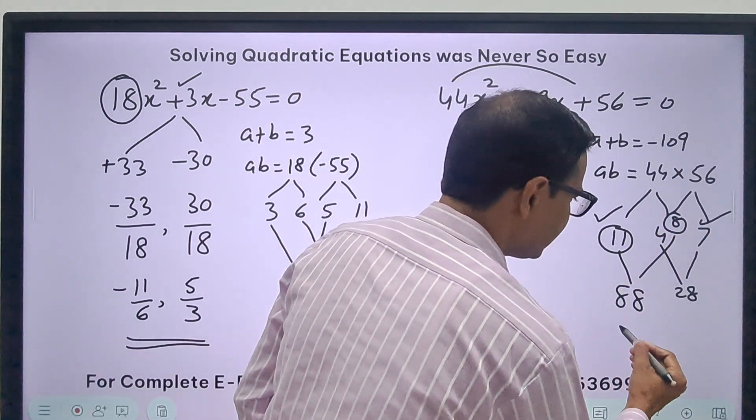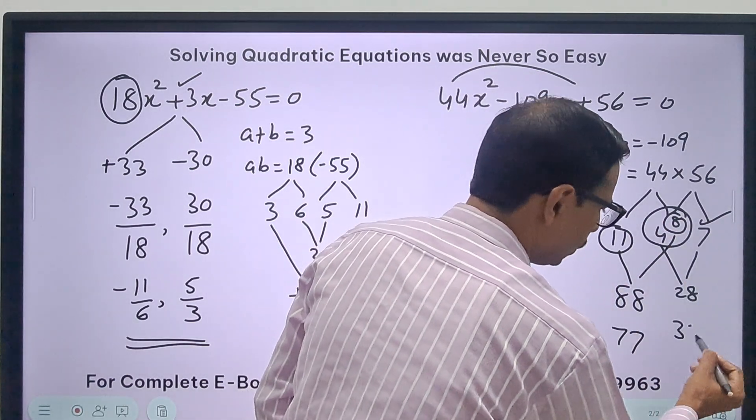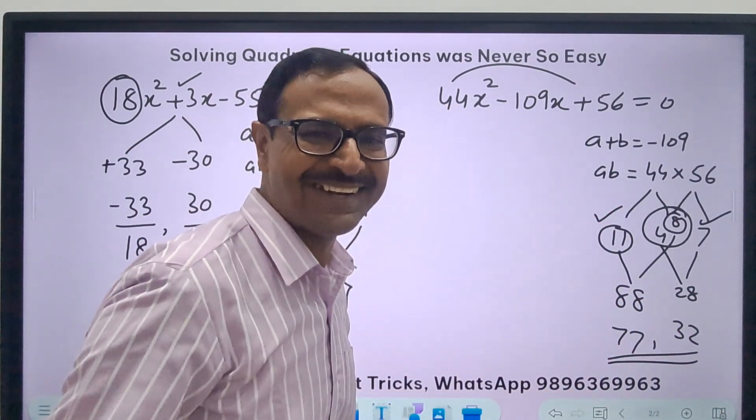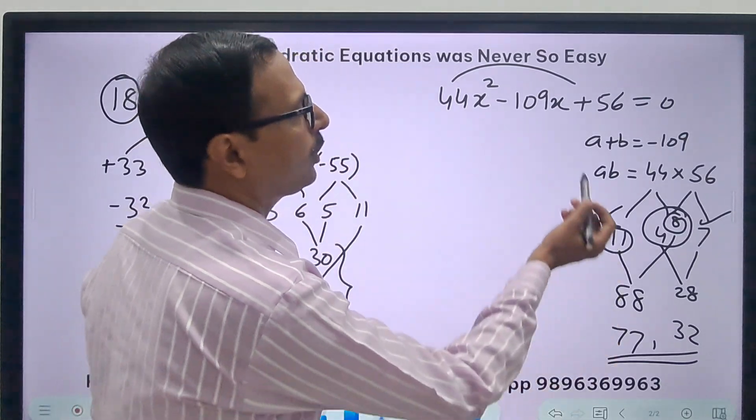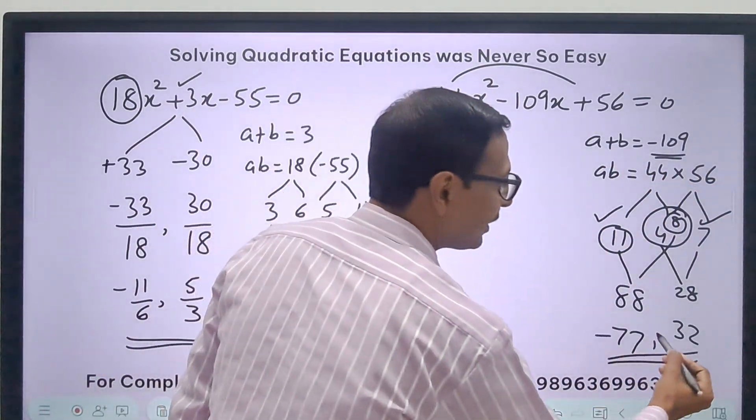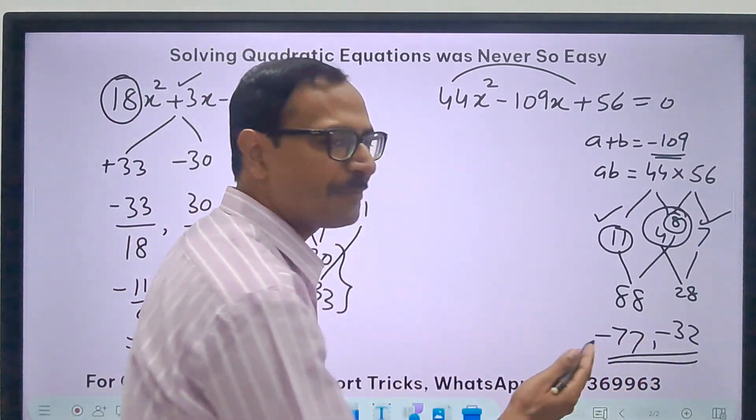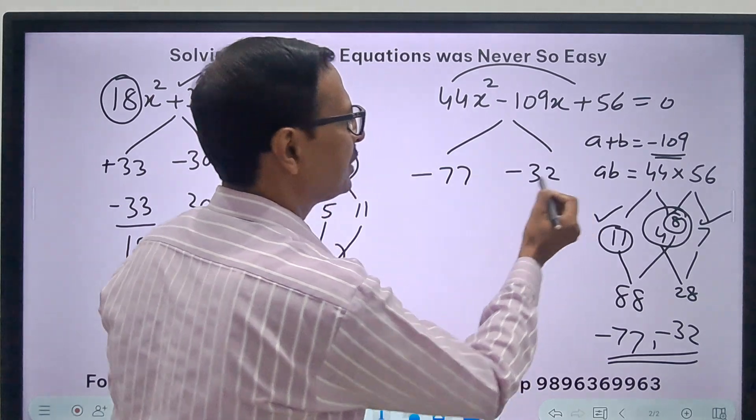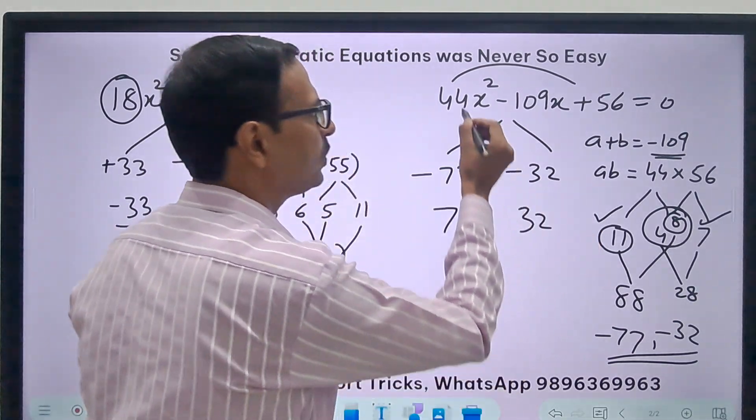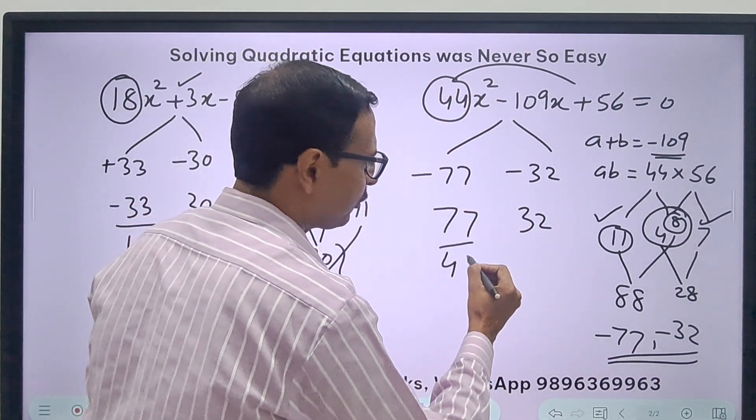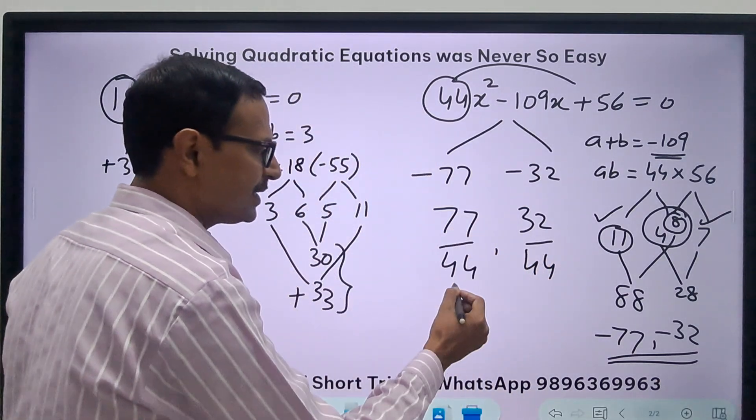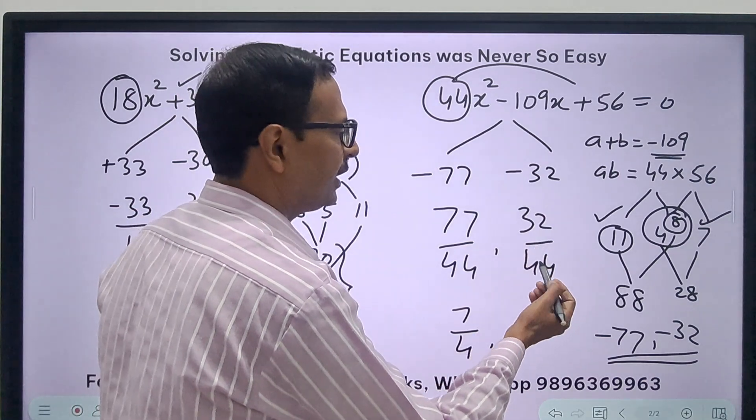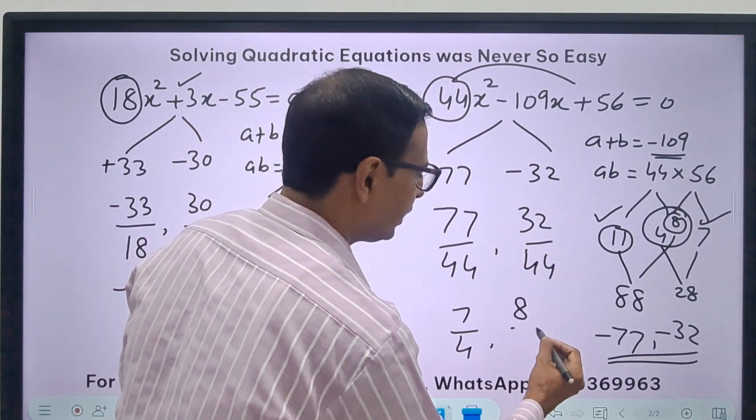How about 11 times 7? 77. And 8 times 4, 32. 109. Oh yes, I get my fact. See 109. See this is smartness. So now since this is negative, I will take both of them as negative because only then the sum will be negative. So split -77 and -32. Change +77 and +32. Divide by 44 and you have the answer. This is 7 by 4, cancelling the common factor 11. And here you cancel the common factor 4, so 8 upon 11. So there we go, 7 upon 4 and 8 upon 11 is the answer for this question.